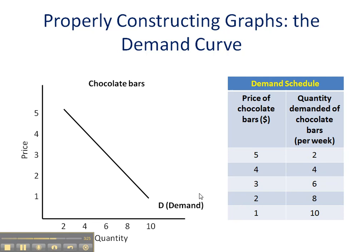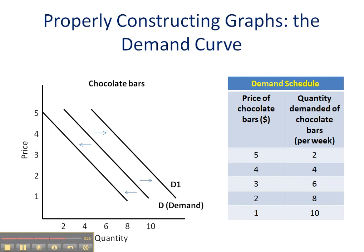We want to make sure that we label our demand curve — 'D' is sufficient, with 'demand' in parenthesis here. If we want to show an increase in demand, as I've done here, always include these arrows, and go ahead and shift our curve. There's our new demand curve, labeled D1 to distinguish it from our original demand curve D. If we want to show a decrease in demand, there's the new left-shifted demand curve. Again, it's a good idea to include those arrows, and label the new demand curve D2 to distinguish it from our original and our last.